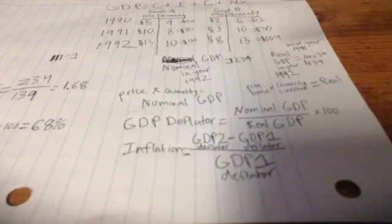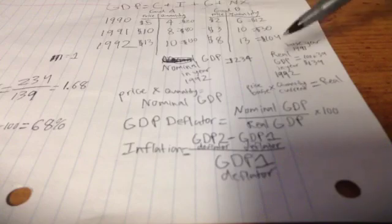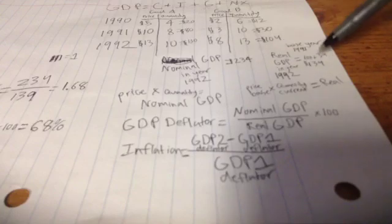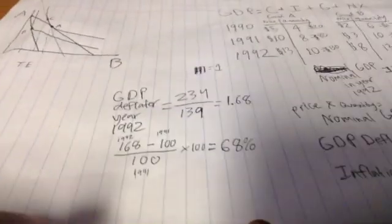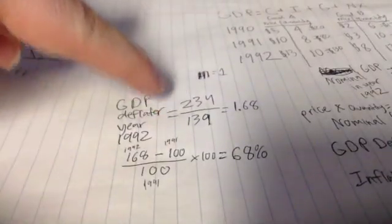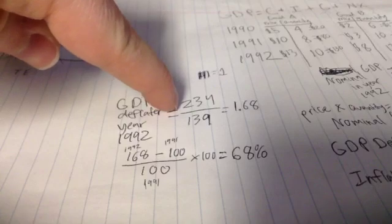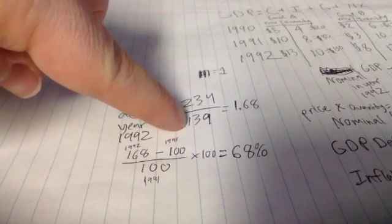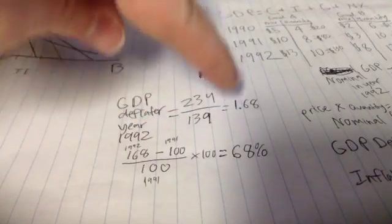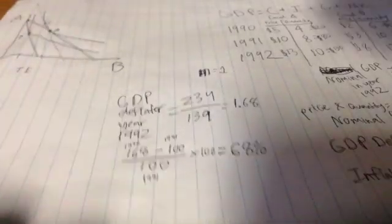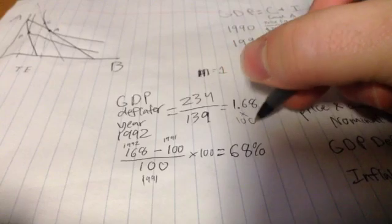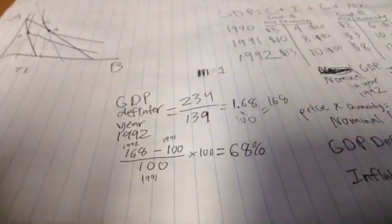Earlier in the previous video, we calculated that nominal GDP in 1992 was 234 and real was 139. So what you're going to do is take 234, which is the nominal GDP in 1992, divided by the real GDP of 139 in 1992, and that will give you 1.68 or 168 if you times that by 100.